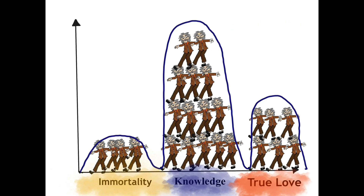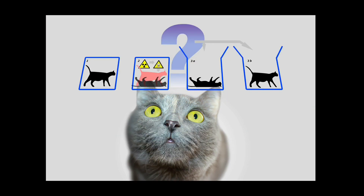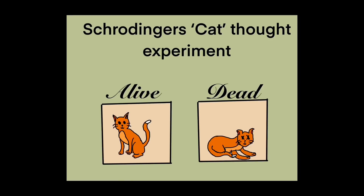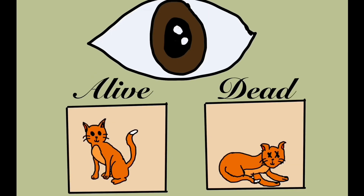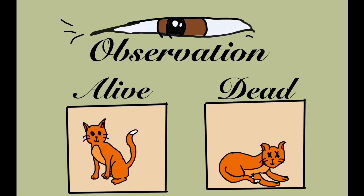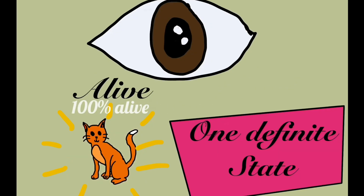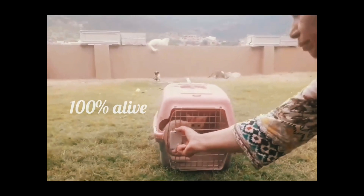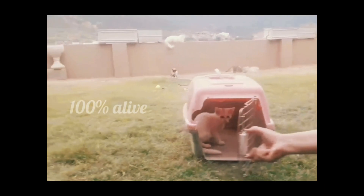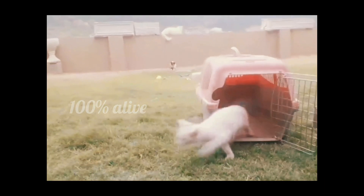We say that the electron is in a state of superposition — just like Schrödinger's cat experiment, in which the cat is both dead and alive before opening the box. But when you open the box and observe, the cat is no longer in superposition but in one definite state. Just like my grandmother's cat: alive.